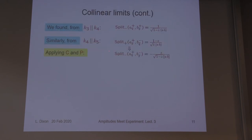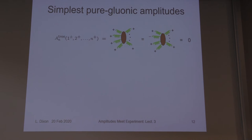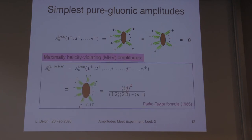We're going to sum over the squares of these in order to produce the unpolarized splitting kernel, which is what you usually see in the literature. Of course, we can do gluon splitting in the same way. The gluon amplitudes with all-plus or one-minus vanish, and as Jake described, we have a nice example of an infinite set of gluon amplitudes to look at: the Parke-Taylor MHV amplitudes.